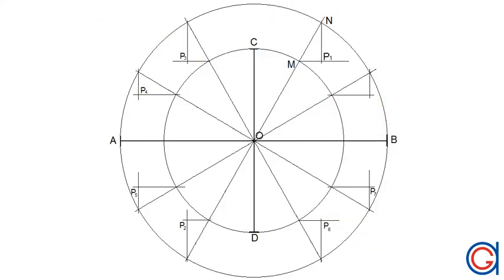So we have eight points plus A, B, C, and D. So 12 points all together that we are going to join freehand with a thicker pencil. Or we can use a curves template or French curves template to help us join the points to form our ellipse, as can be seen here.